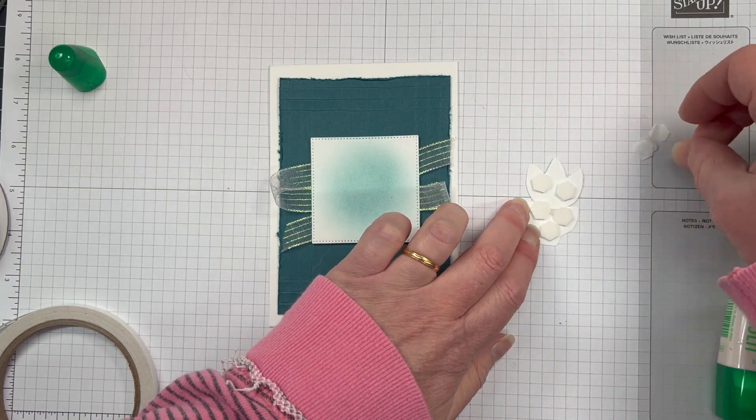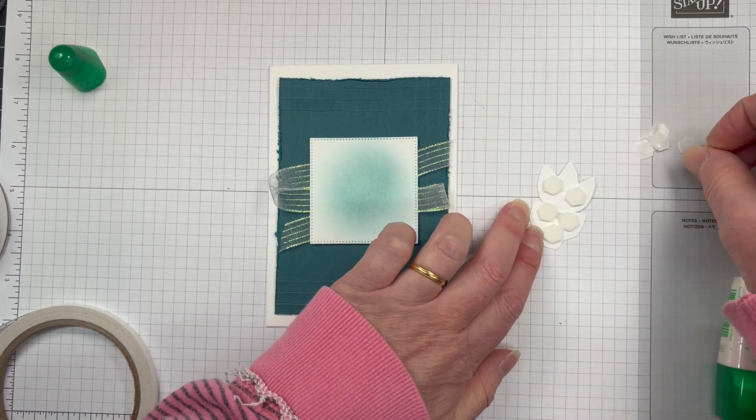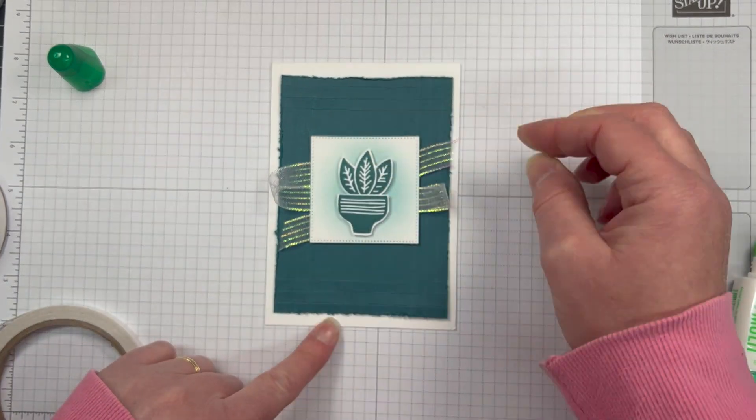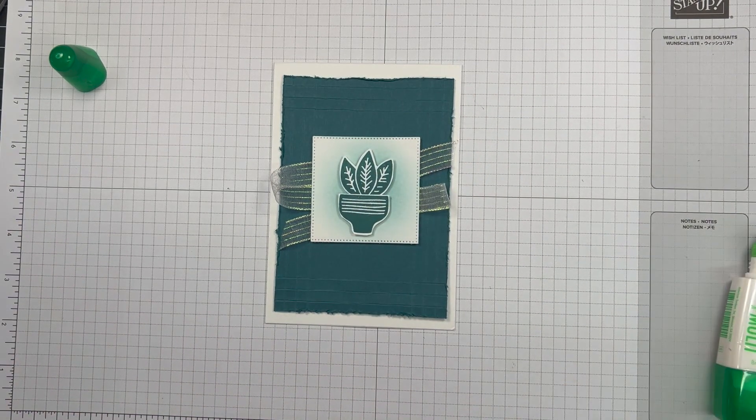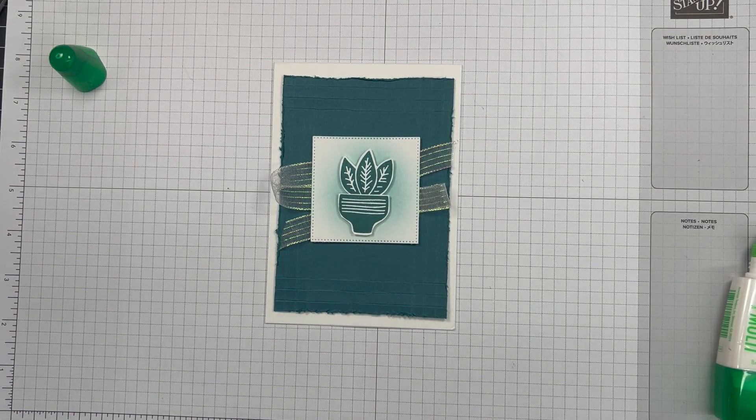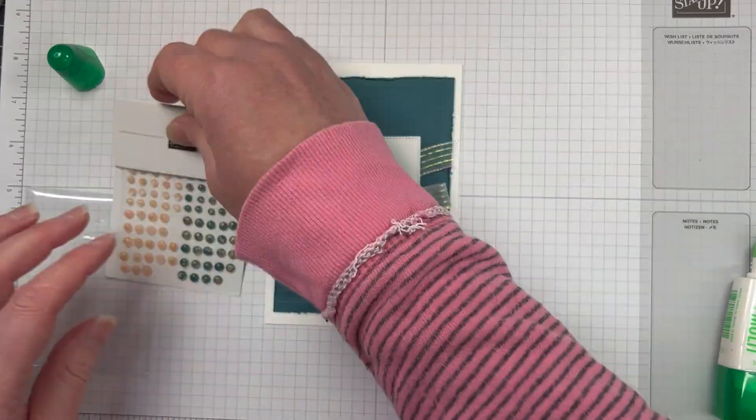They're in the annual catalog, page 114, and we're just going to add three of those—two large ones and a small one—to that card base. And honestly, they are so pretty; they've got like a gold fleck in them as well.